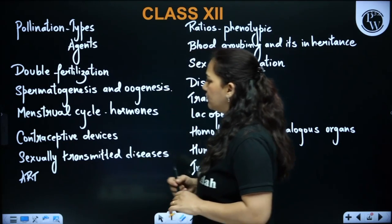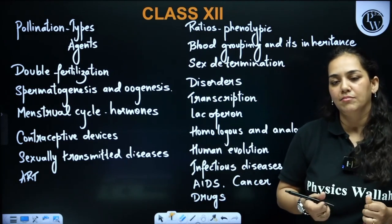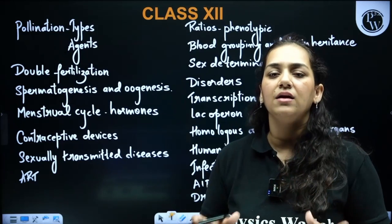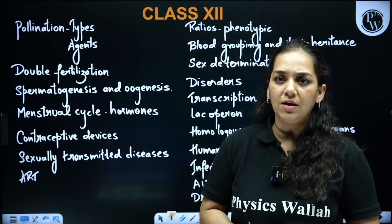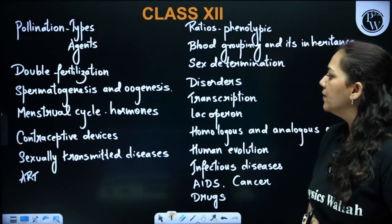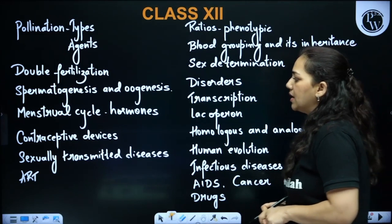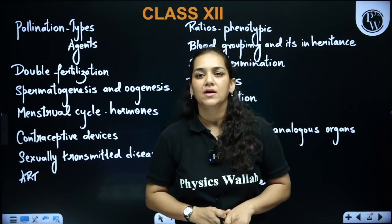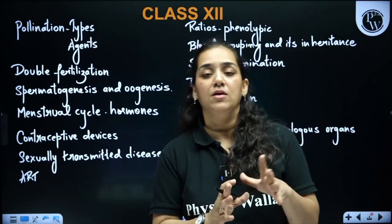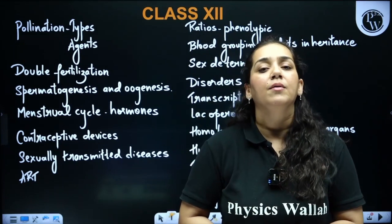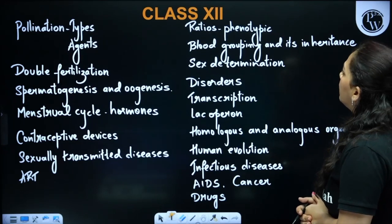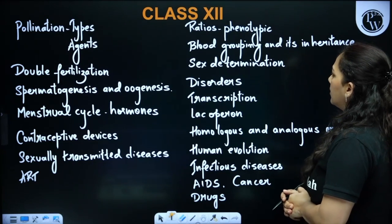Next are contraceptive devices mentioned in your book — many questions can be asked around that topic. Sexually transmitted diseases and ART — assisted reproductive techniques — are also important; all types included will become important because questions are repeatedly asked from this topic.